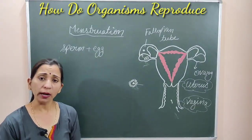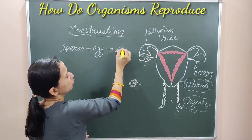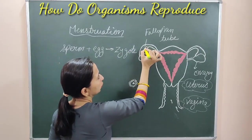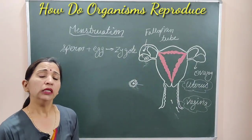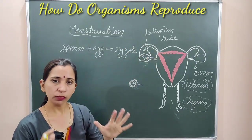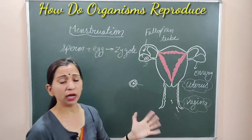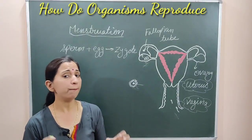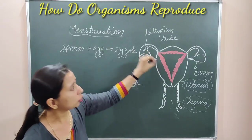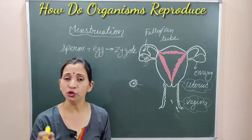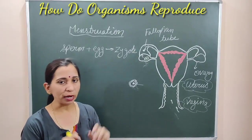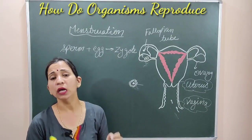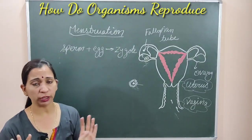In the fallopian tube, the most important process happens — fertilization. The sperms enter the female reproductive system, crossing the vagina, cervix, and uterus, and enter the fallopian tube where fertilization happens. When fertilization occurs between the sperm and egg, the structure formed is known as the zygote. This zygote then moves towards the uterus and gets implanted — implantation is the attachment of the zygote or growing embryo with the wall of the uterus.